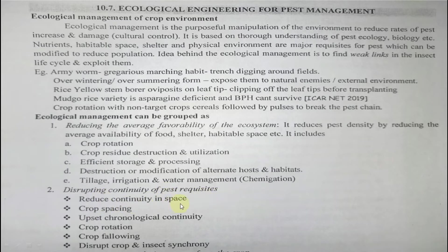The second grouping is disrupting the continuity of pest requisites. To reduce continuity in space, crop spacing is used. To upset chronological continuity, early sowing or late sowing is practiced along with crop rotation. Crop fallowing — leaving the land for a few periods — disrupts the crop and insect synchrony. Host escape comes into play here as well.